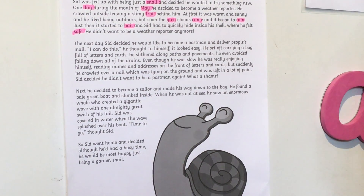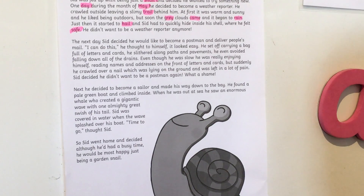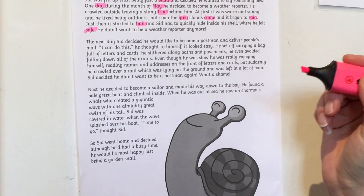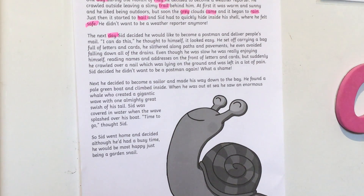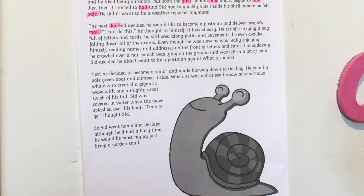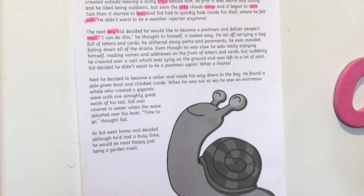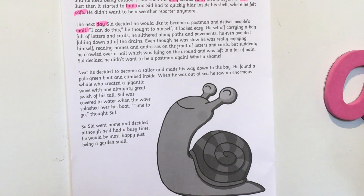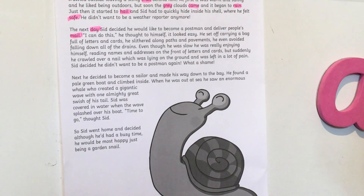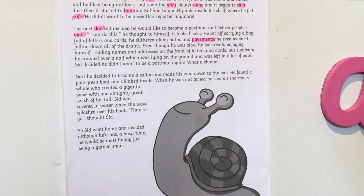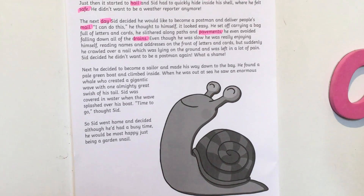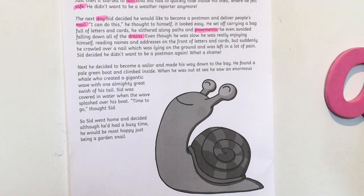We're going to whiz back and you're going to shout out when you hear the A words. The next day Sid decided — oh yes, 'day,' well done — he would like to become a postman and deliver people's mail. 'Mail,' well done. It looked easy — no, not 'easy,' that's not got an A sound in it. He set off carrying a bag full of letters and cards — no, not 'cards.' He slithered along paths and pavements — 'pavements,' that was a long word. He even avoided falling down all the drains — 'drains,' well done. Even though he was slow he was really enjoying himself reading names and addresses on the front of letters and cards — no, nothing in there.